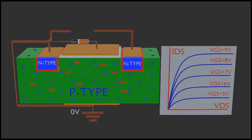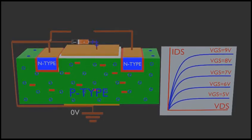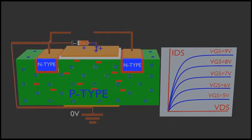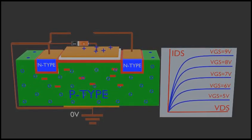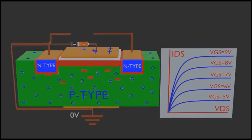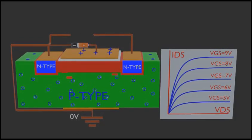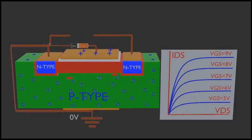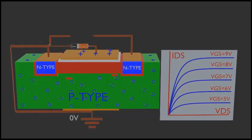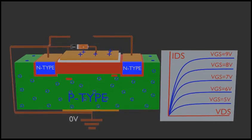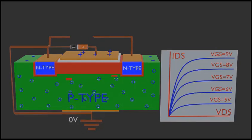Due to the field of positive charges at the gate, electrons are attracted and holes are repelled from the substrate near the gate — it acts just like a capacitor. These electrons form a channel between drain and source. The channel width depends on the gate voltage, as you can observe in the graph. By increasing the gate voltage we can enhance the channel — that is why this is called an enhancement type MOSFET.